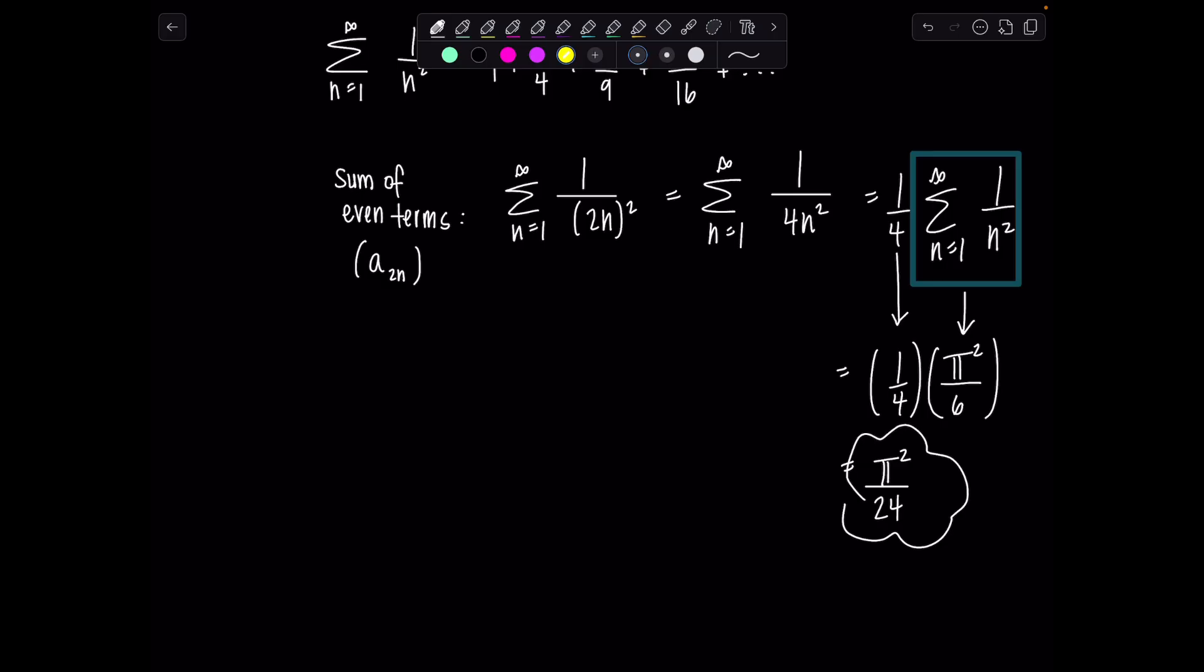So that's the sum of the even terms. Now the sum of the even terms plus the sum of the odd terms gives us the entire sum of the series. So the sum of the odd terms would be the entire sum of the series minus the sum of the even terms. And we know the sum of this p series is pi squared over 6 minus the sum of the even terms we just found to be pi squared over 24. So that's the sum of the odd terms.